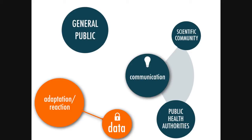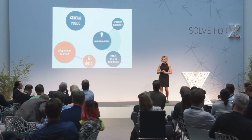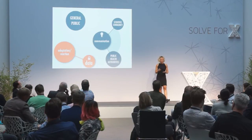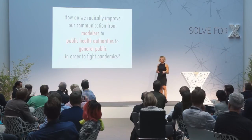We cannot consider the general public as a passive actor anymore — we have to include them in a more active role. Whenever they change and adapt, if we want to face and control epidemics in real time, we also need data to understand how they change behavior. We want to characterize them, include them in a model, and in a feedback loop provide an adapted version of our approaches that can deal with the ever-changing epidemic situation. The challenge I leave you with is: how do we radically change and improve communication between modelers, public health authorities, and individuals in order to fight pandemics? Thank you.